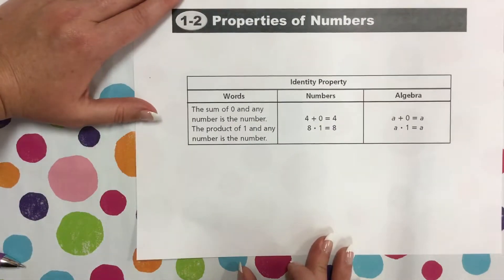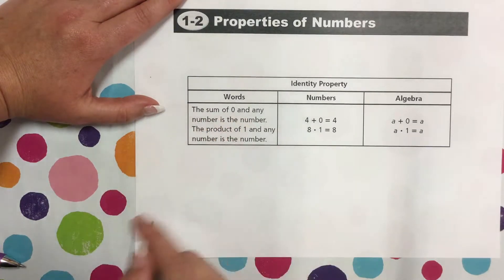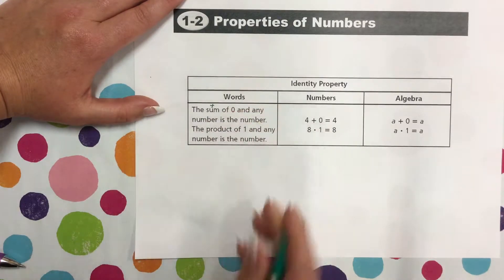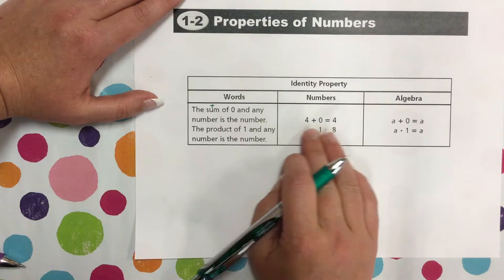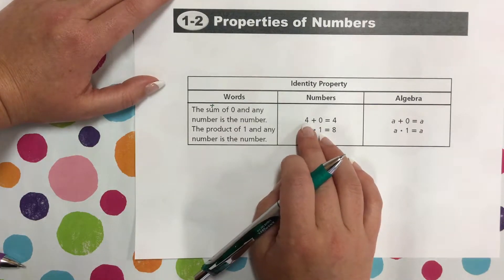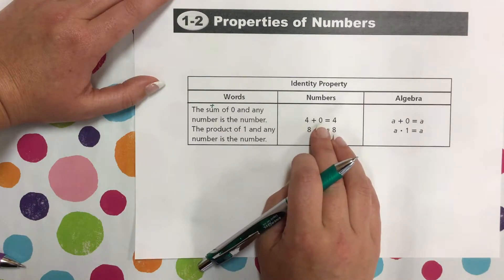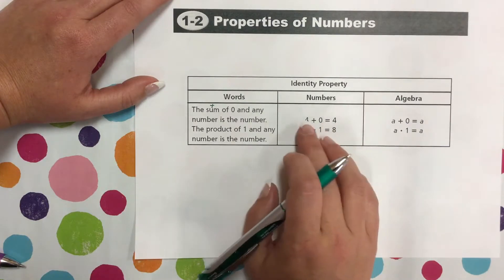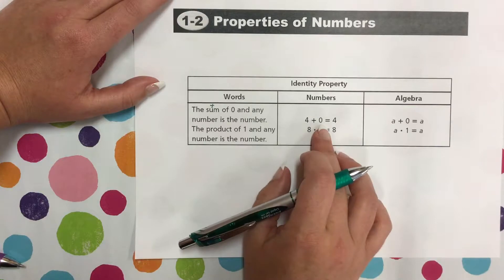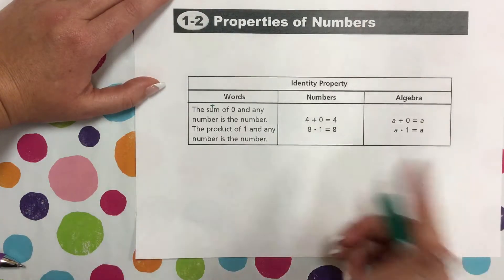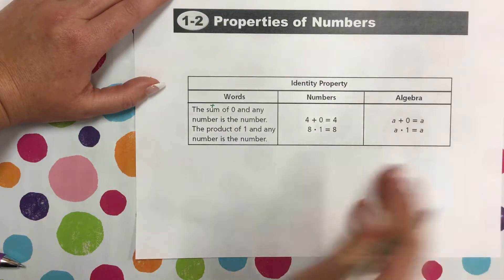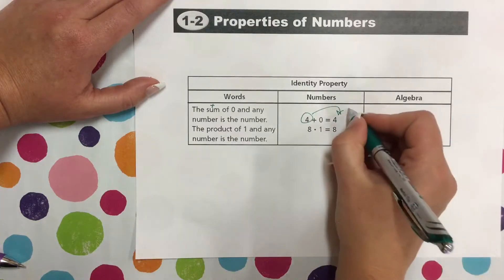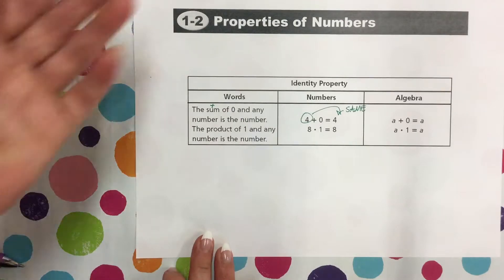On to the next property: the identity property. The identity property states that the sum of zero and any number is the number — when we say sum, we're talking about addition. So we're adding two things together: zero and any number, and we get that number. For example, 4 plus 0 equals 4. It's like identity — you start with the number 4, add it to zero, and you get the same thing back. That's why it's called the identity property. You add any number to zero and you get the same thing.